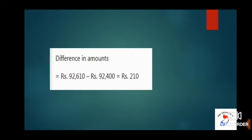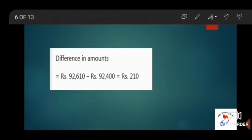Now we have to find the difference in amounts. Difference = 92,610 minus 92,400, which is equal to Rs. 210. This completes problem number 6.